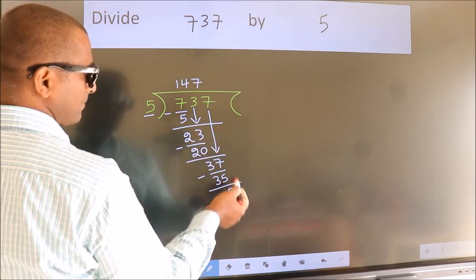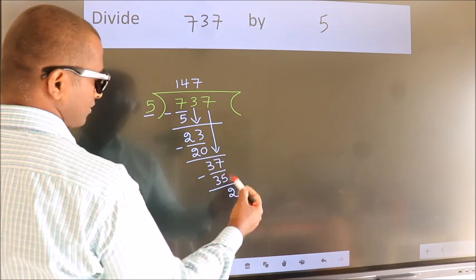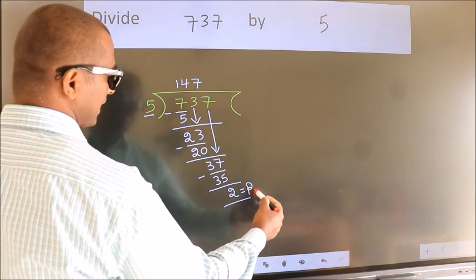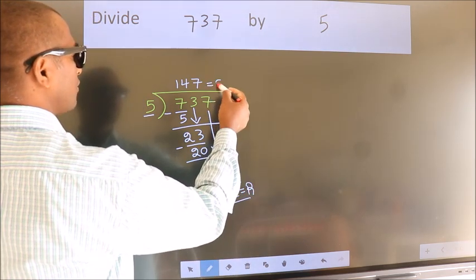No more numbers to bring down. So we stop here. This is our remainder. This is our quotient.